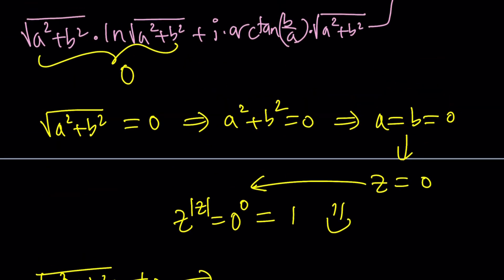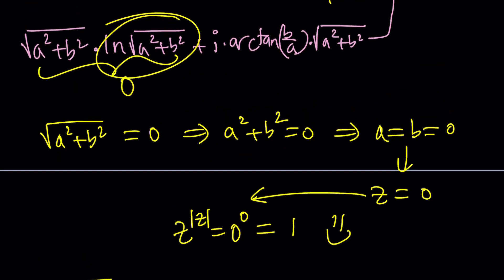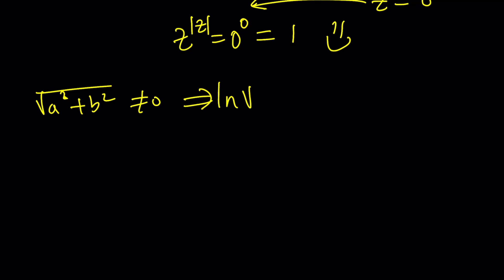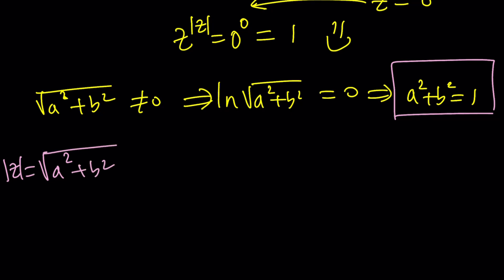So the other factor must be zero, ln of that, which implies that a squared plus b squared is equal to one.